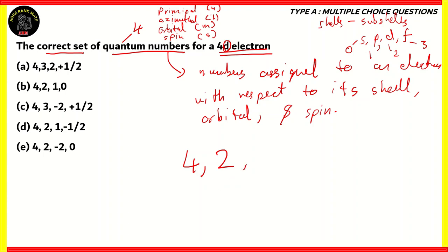Before we calculate the orbital and spin quantum numbers, let's look at our options. Every option has the first quantum number as 4, so we cannot discard any option on that basis. However, if we look at the azimuthal quantum number, options A and C have the number 3, which indicates the f subshell — that is incorrect. Options B, D, and E have the number 2 as the azimuthal quantum number, which is correct for a 4D electron.